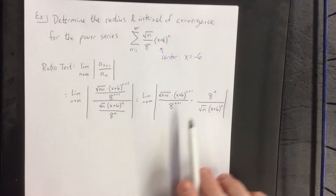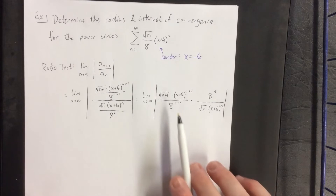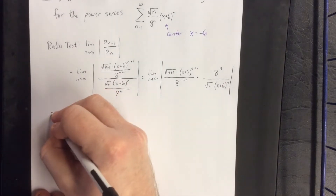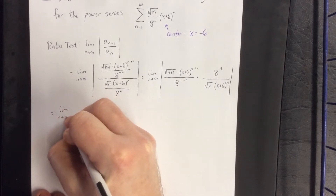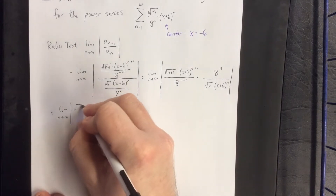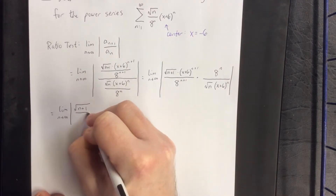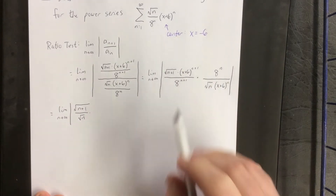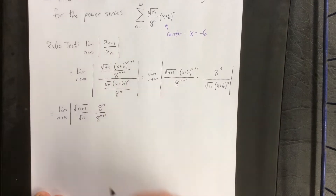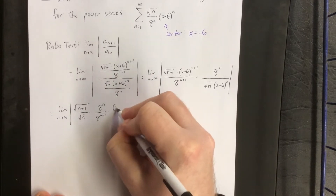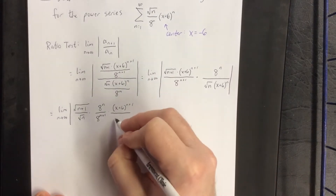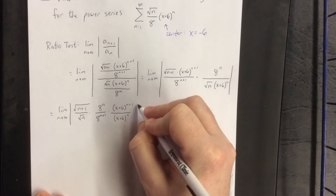As is typical in the ratio test, we multiply by the reciprocal of the denominator. We group like terms together: square root goes with square root, giving the square root of n plus 1 divided by the square root of n. The 8's go together with 8 to the n on top and 8 to the n plus 1 on the bottom. And x plus 6 to the n plus 1 power on top with x plus 6 to the n power on the bottom.